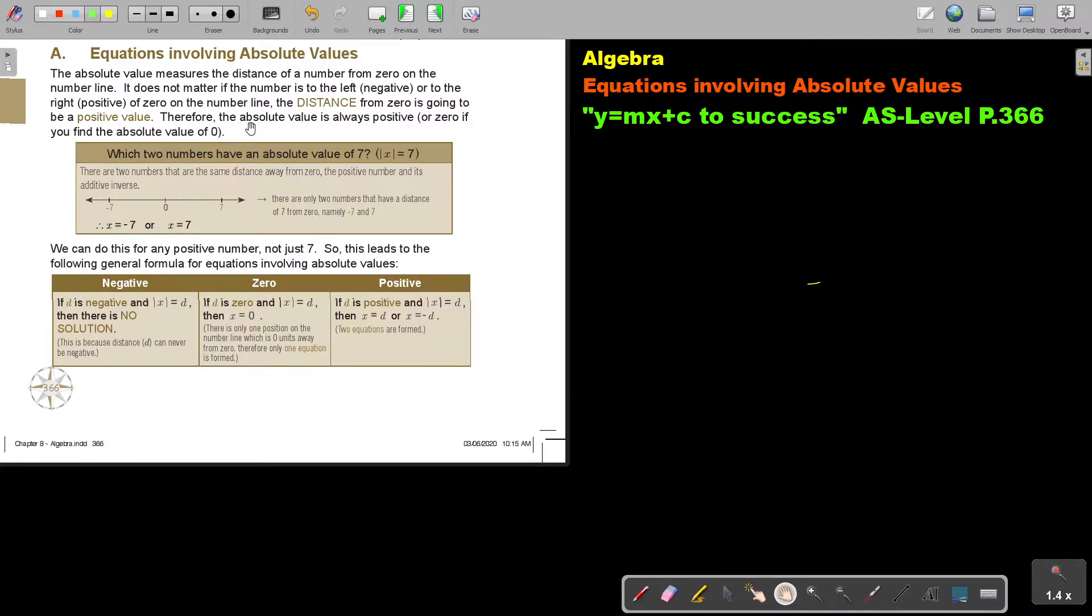Therefore, the absolute value is always positive or zero if you find the absolute value of zero, because then it's no movement from zero.